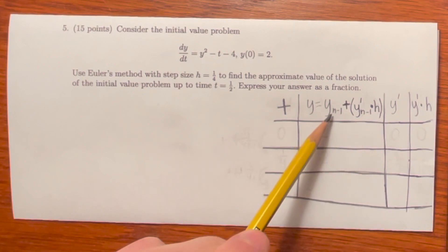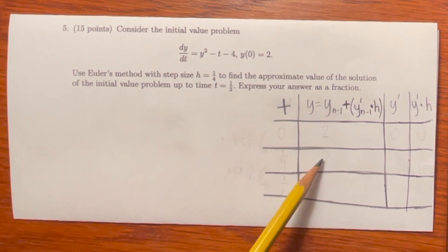And y of n minus 1 simply means the y before it. So if we're on this row right here, the y before it would be the one in the previous row. In this table, I put t, y prime, and y prime times h for convenience sake.